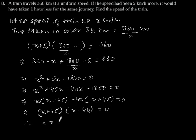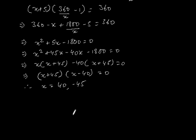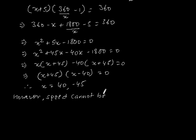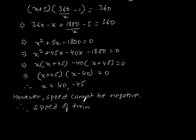This gives x = 40 or x = minus 45. However, speed cannot be negative. Therefore, the speed of the train is 40 km per hour.